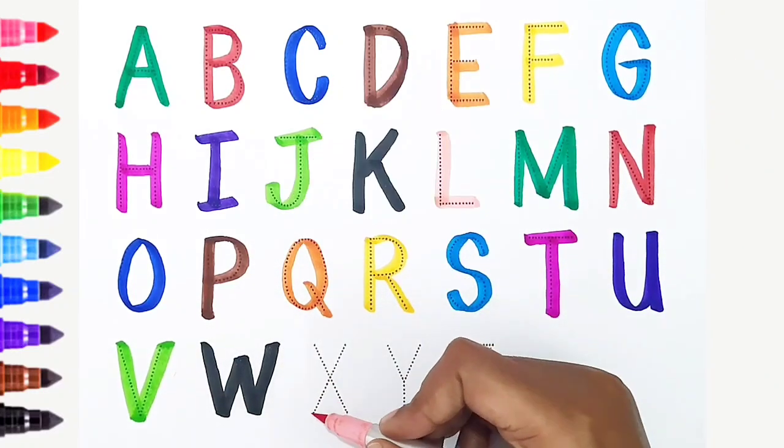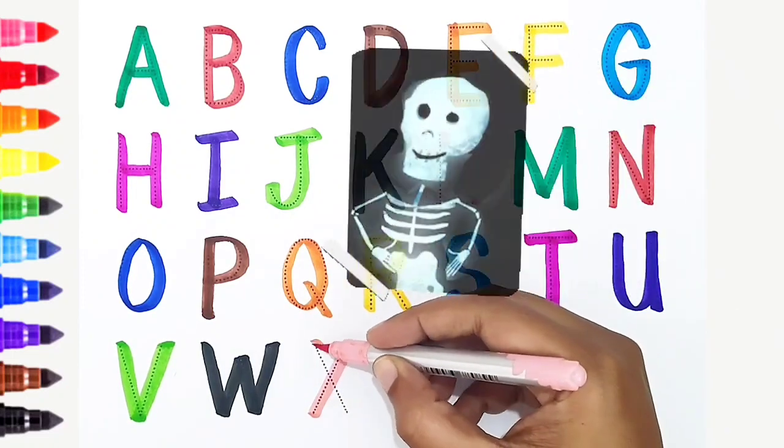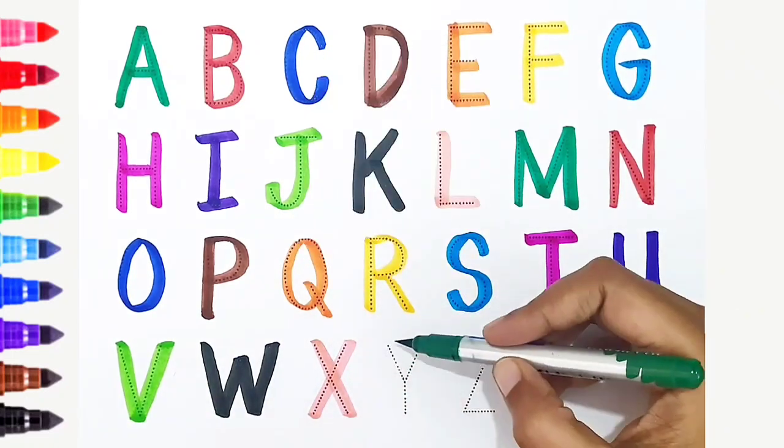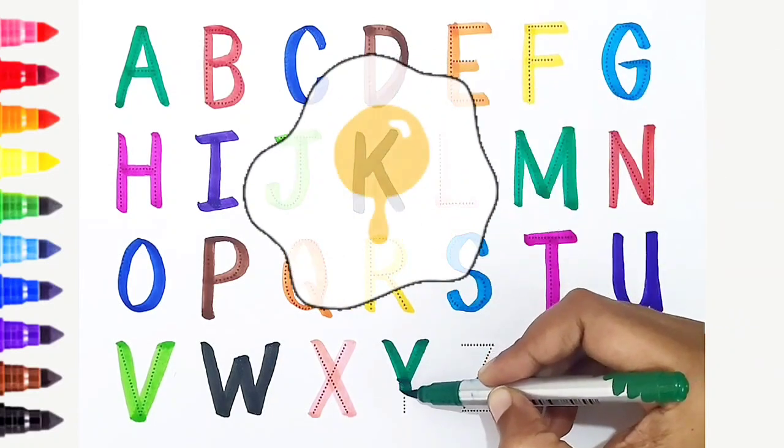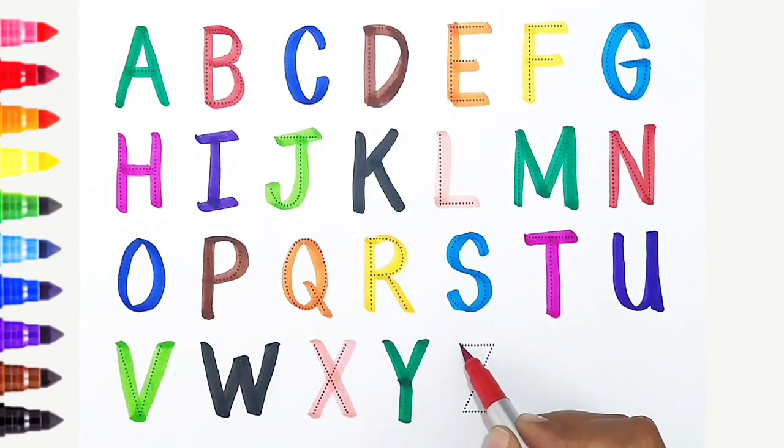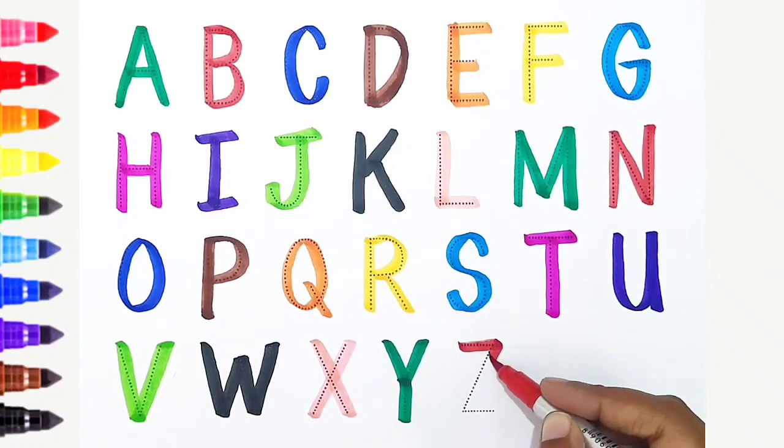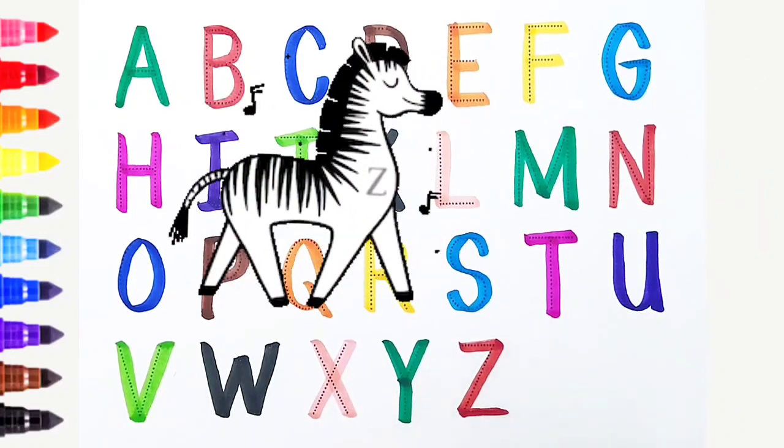X, light pink color, X is for x-ray. Y, dark green color, Y is for york. Z, red color, Z is for zebra. Once again!